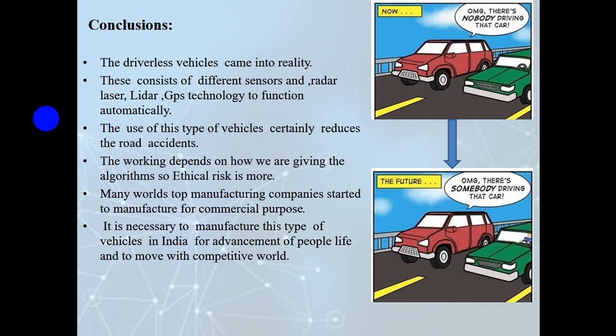In the future, if someone sees nobody is driving the car — a driverless vehicle on the road — they will say 'Oh my god, there is somebody driving that car!' That is the future of this technology. In conclusion, the driverless vehicle has come into reality. It consists of different sensors, radars, LIDAR, and GPS technology to function automatically. The use of this type of vehicle certainly reduces road accidents. Many world-class manufacturing companies have started to manufacture for commercial purposes. It is necessary to manufacture this type of vehicle in countries like India for the advancement of people's lives and to move with the competitive world.